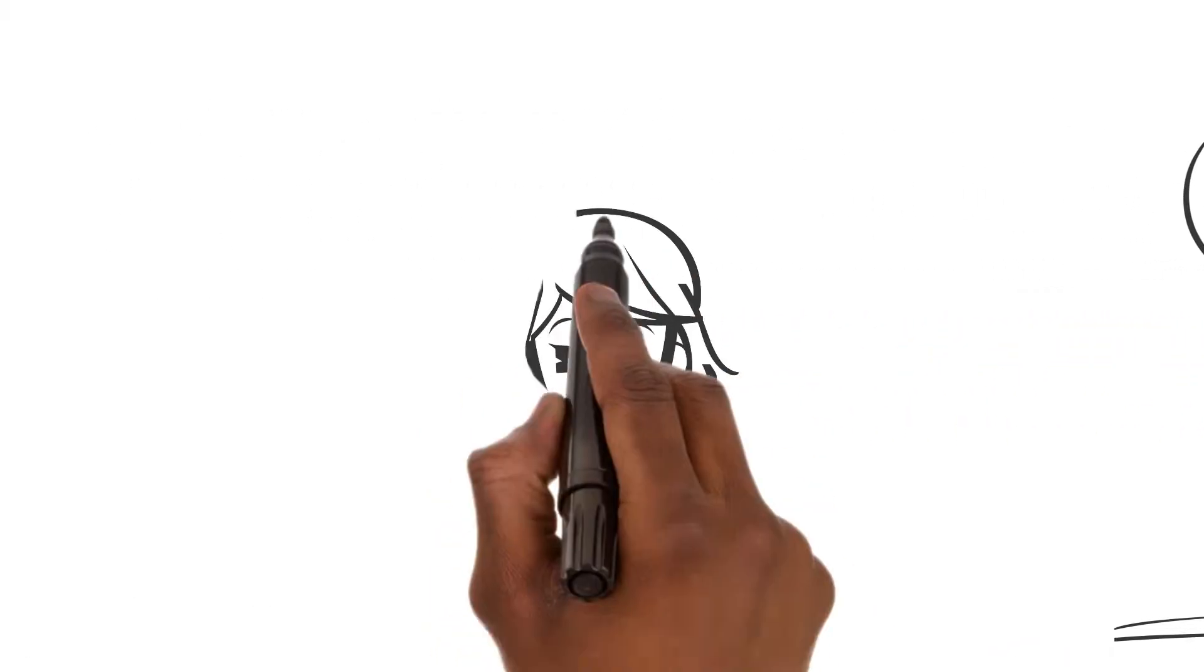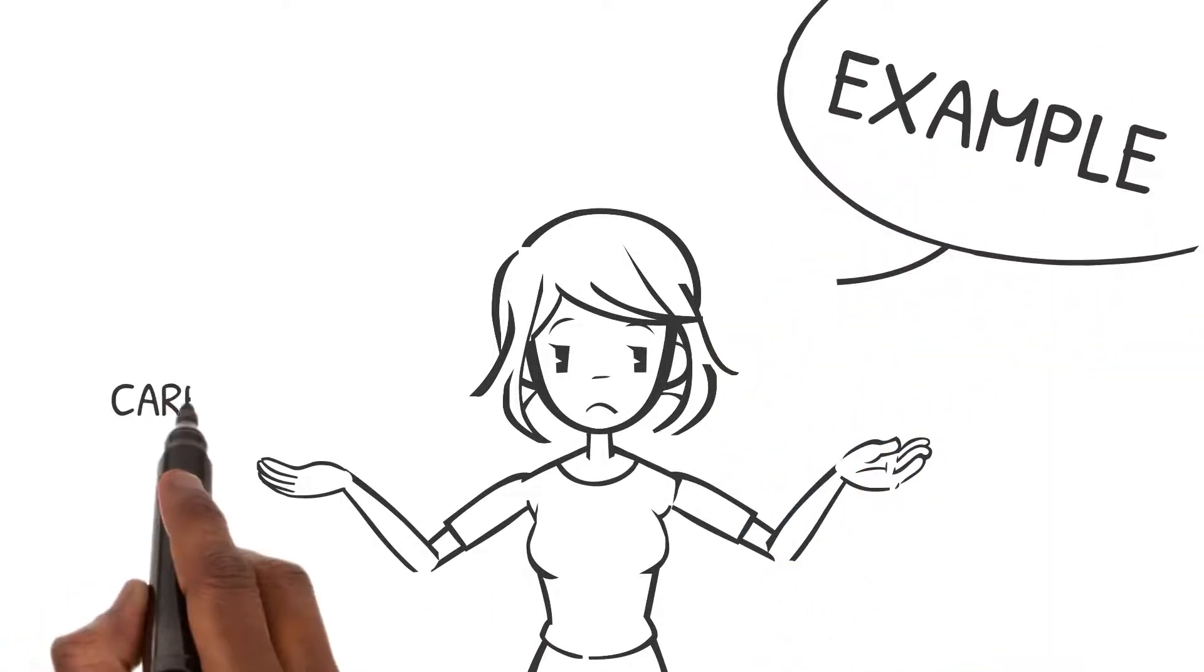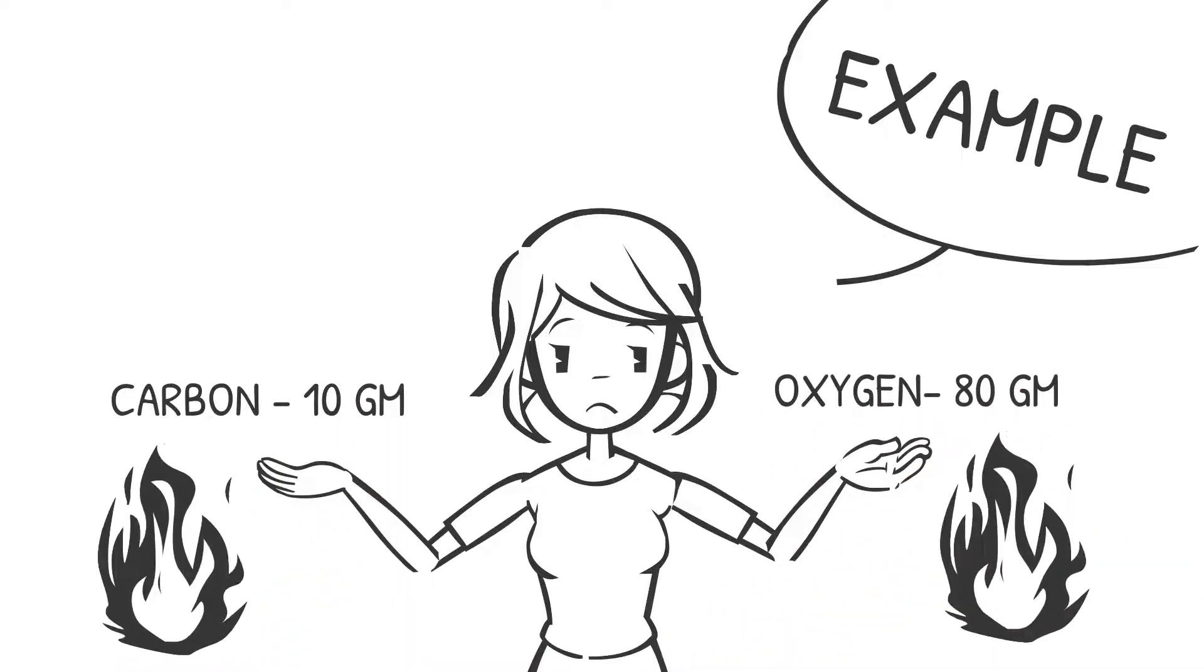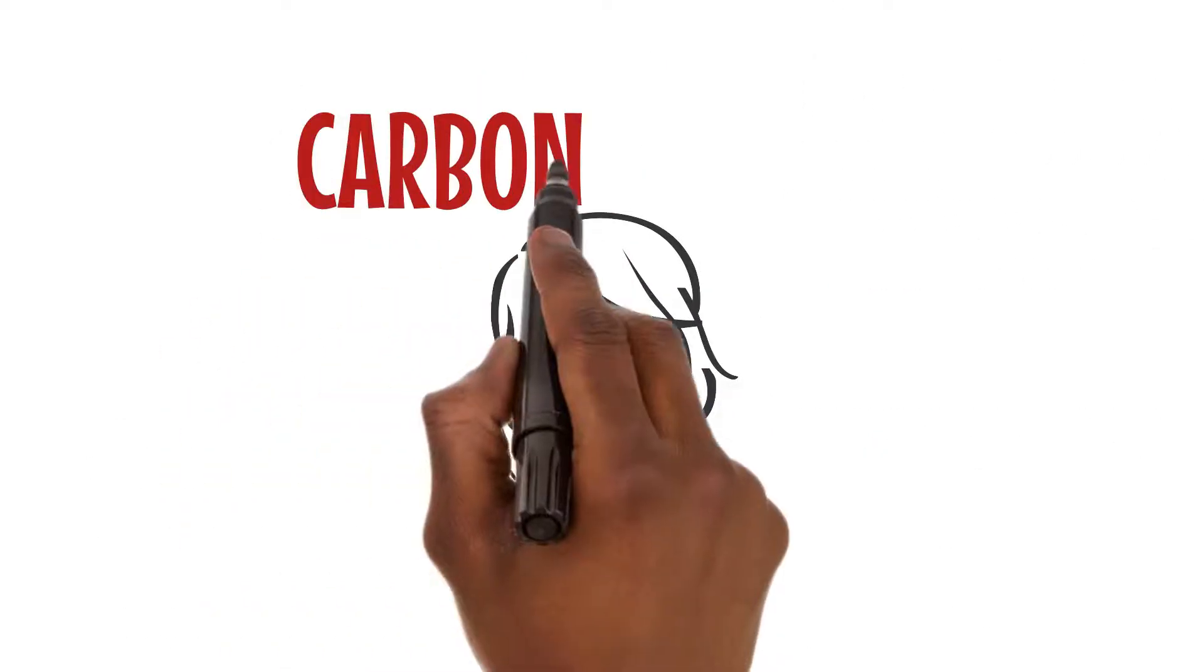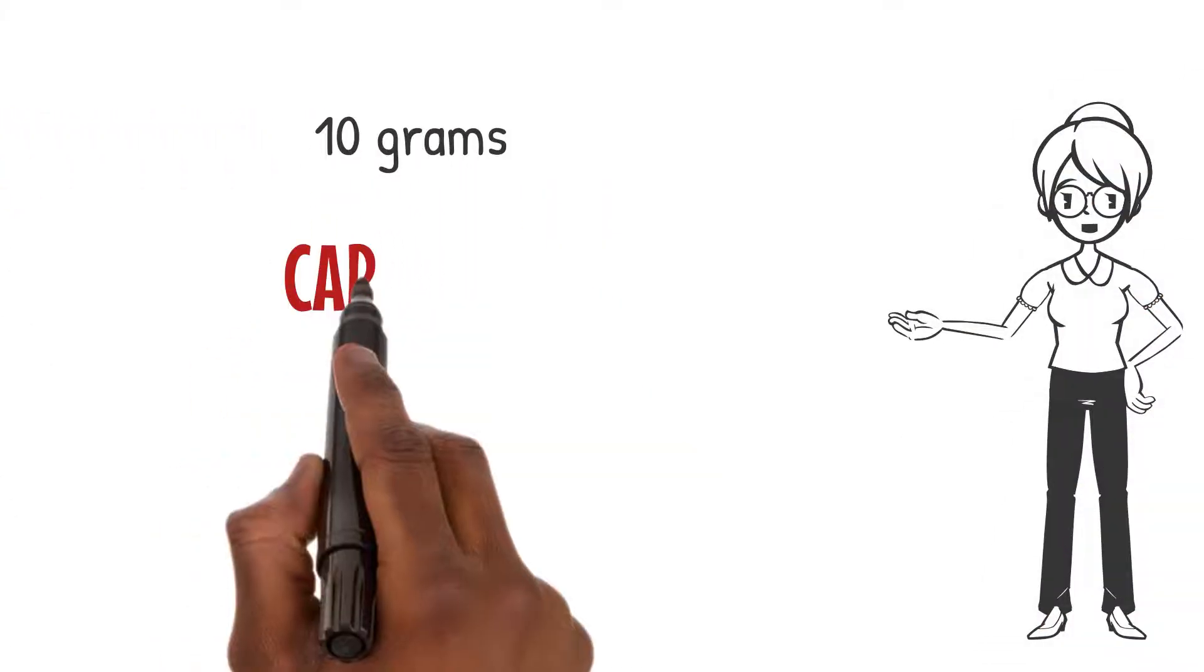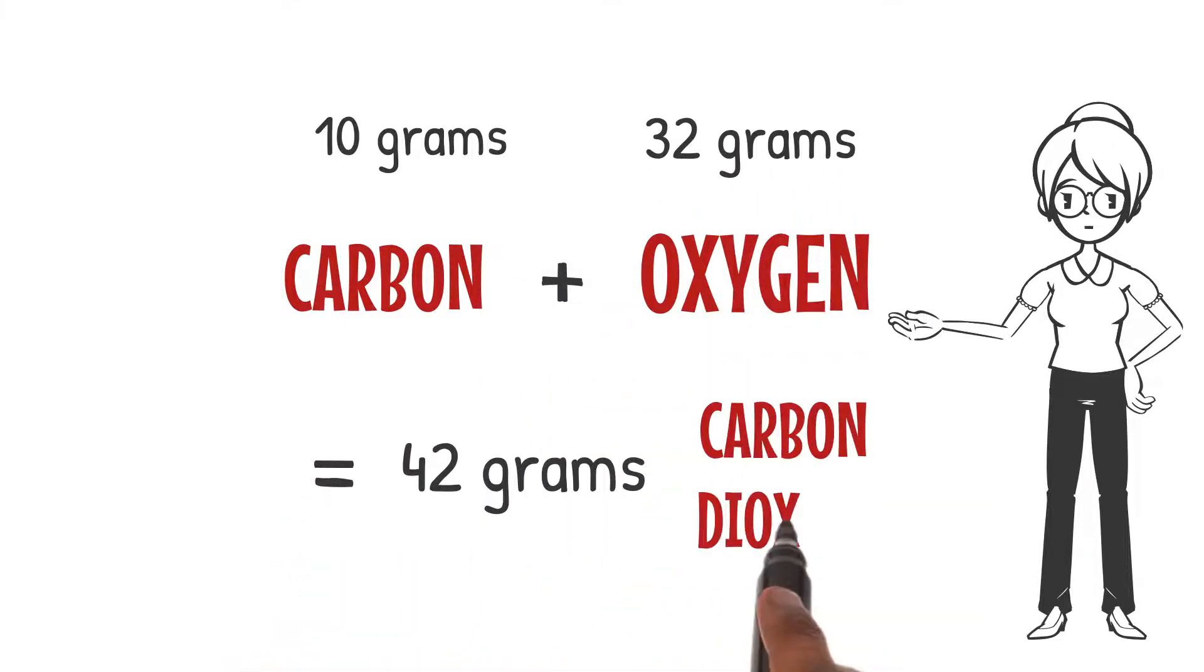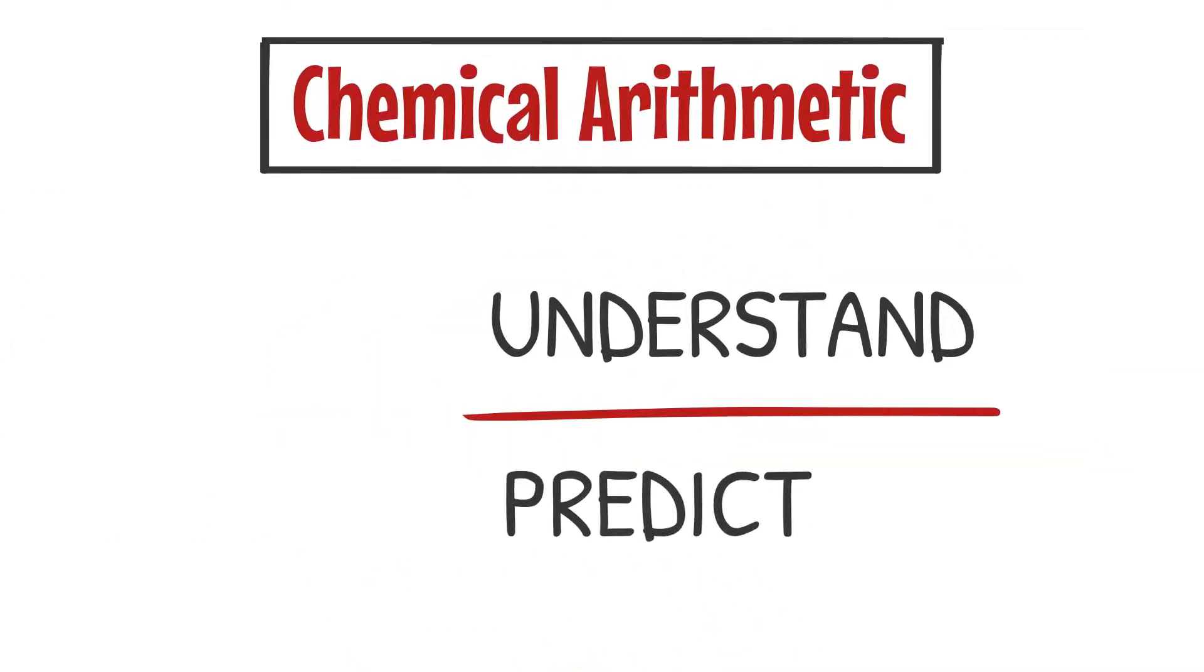Now let's put our knowledge to the test with a mind-boggling example. Imagine you have 10 grams of carbon and 80 grams of oxygen. When you burn them, what do you think you'll get? Yes, you guessed it right—it's carbon dioxide. And when we calculate the masses involved, we find that 10 grams of carbon combines with 32 grams of oxygen to produce 42 grams of carbon dioxide. Chemical arithmetic helps us understand and predict these fascinating transformations.